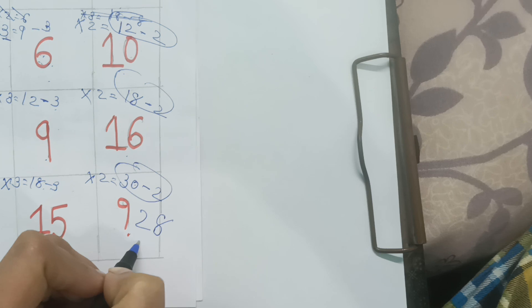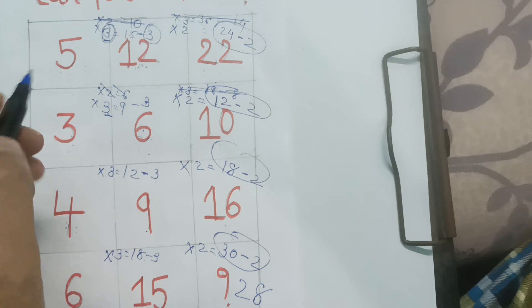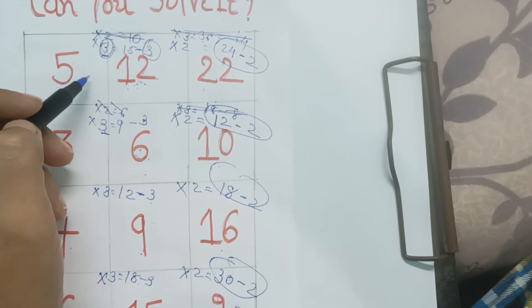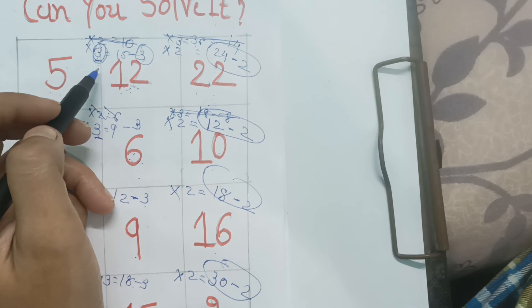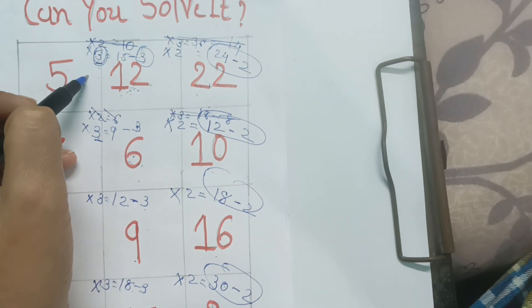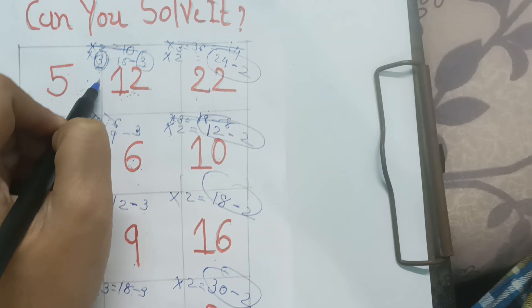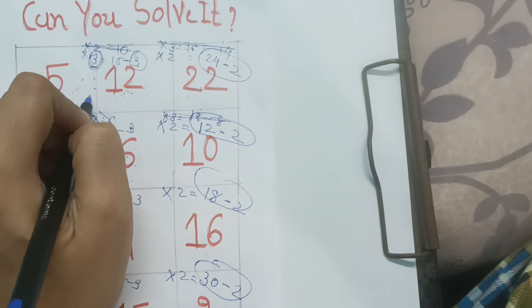So the answer is twenty-eight. Whenever this type of question is in front of you, first try a square, then try multiplying and deducting a nearby number. Take possibilities like three, four, or two as the multiplier. Try to do it in your mind, and if you cannot, take a pen and work it out. Thank you.